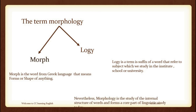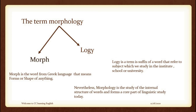When the two words combine together, morphology becomes the study of the internal structure of words and forms — a core part of linguistic study. So the term of morphology is divided into two parts: morph, meaning the forms or shapes of words, and logi, meaning the subject we learn. That is the term of morphology.